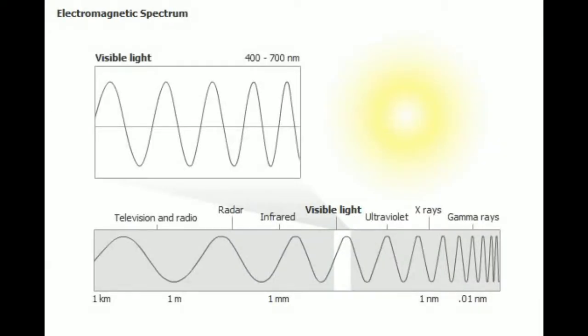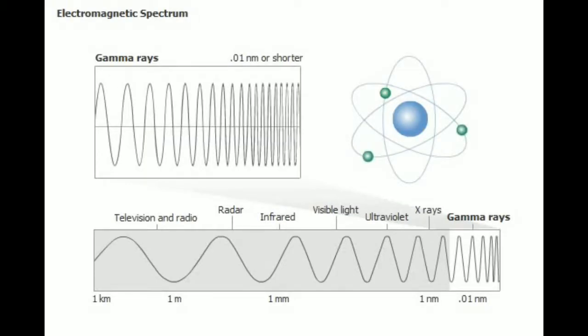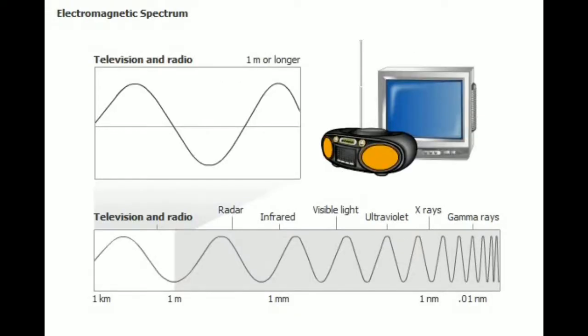Visible light represents only a narrow band of the electromagnetic spectrum, which includes many kinds of waves. Gamma rays have an extremely high frequency and short wavelength. Radio waves have a much lower frequency and much longer wavelength.